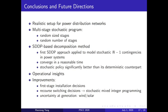In conclusion, we set up a realistic optimal power flow problem considering N-1 contingencies using the stochastic disruption model. We formulate a multi-stage stochastic program with random sized stages and a random number of stages. We use a modified SDDP based decomposition method to solve this problem. It is first proposed and it will converge in a reasonable time. We can show that our stochastic policy is significantly better than its deterministic counterpart in terms of cost. It also reveals some operational insights regarding whether to harden some lines or how much impact the recovery time has.